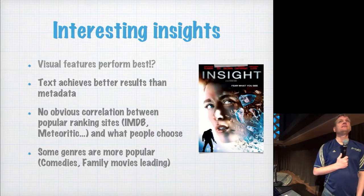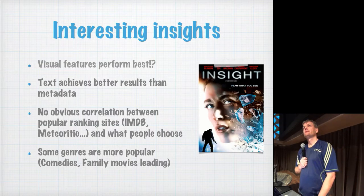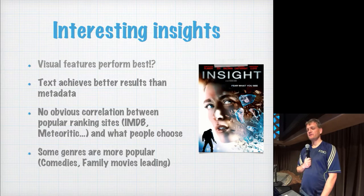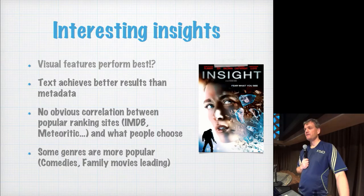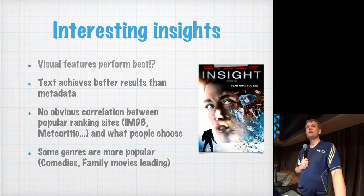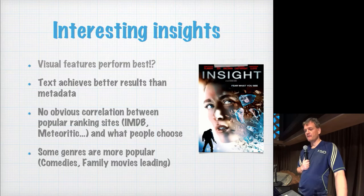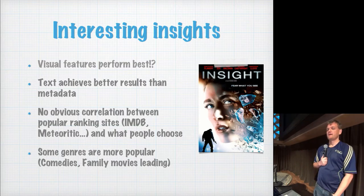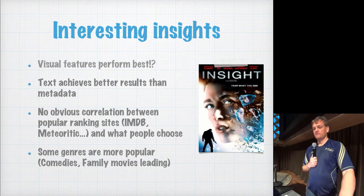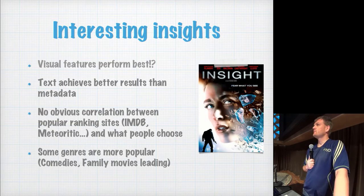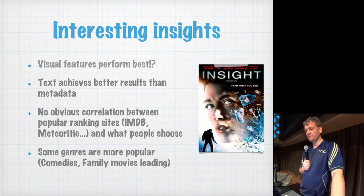So what kind of insights can we learn from this? It's kind of surprising that the visual features perform best, because you have ratings, you have comments, and so on, but in this case the visual features gave the best results — maybe because brightness and things like that have something to say. Text achieves better results than metadata, and there's no obvious correlation between comments and ratings and what people actually choose. Furthermore, some types of videos are more popular than others, like comedies and family movies, which seem to be most popular.